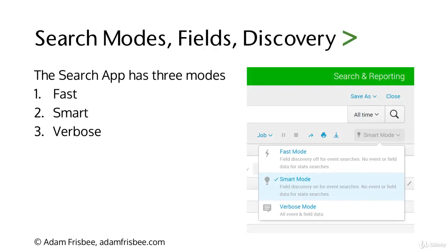Welcome back, and welcome to Search Modes, Fields, and Field Discovery. As we've seen before, the Search app has three modes, and you can select the mode right under the time picker in the search bar. Splunk has Fast Mode, Smart Mode, and Verbose Mode.